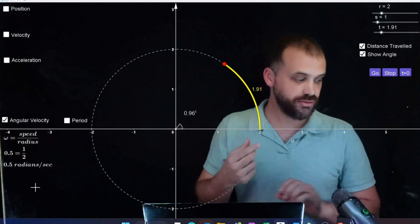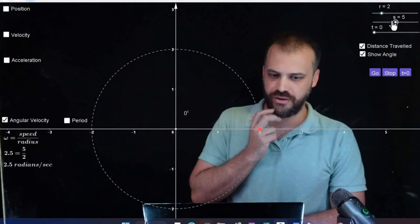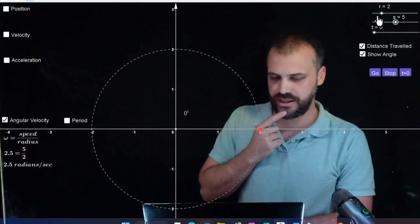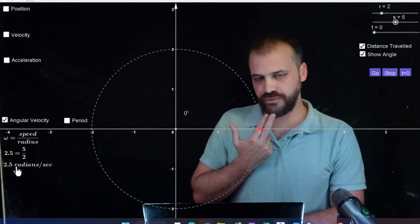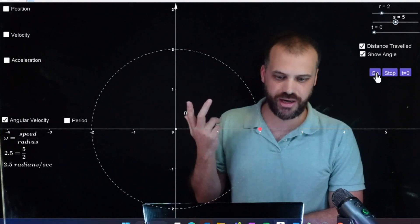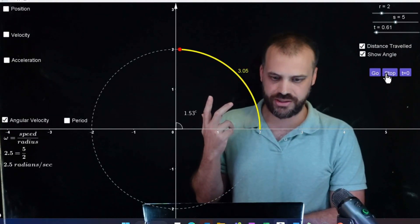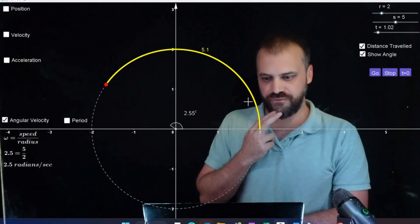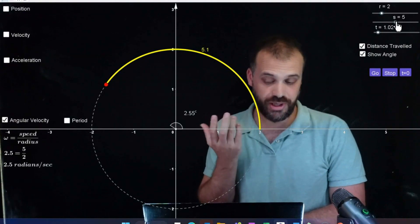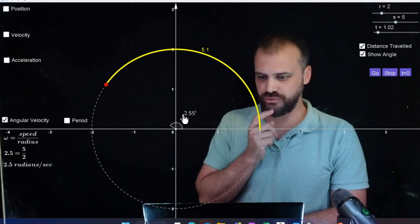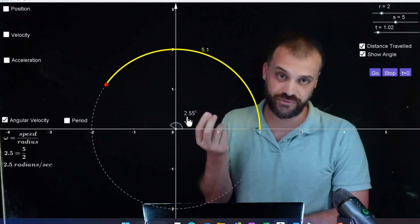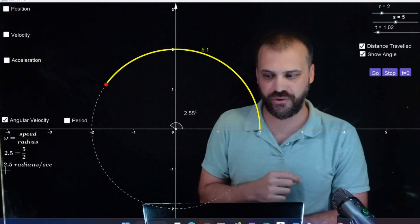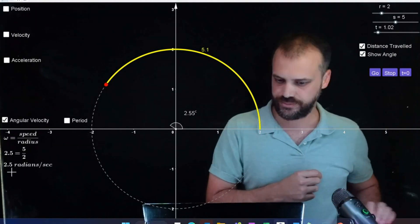Just to really harp on this, if we change the speed to like 5 meters per second and keep the radius of our circle at 2, our angular velocity is 2.5 radians per circle. Go. One second, stop. After one second, you can see we've traveled 5 meters, which is what our speed was. And our angular velocity - we've traveled 2.55 radians because our speed, our angular velocity, sorry, is 2.5 radians per second.